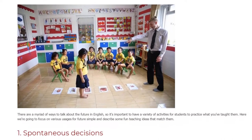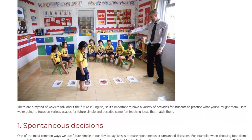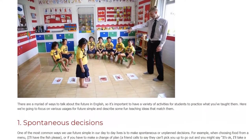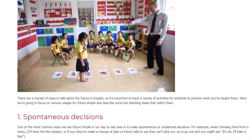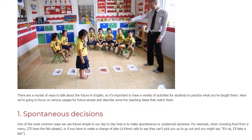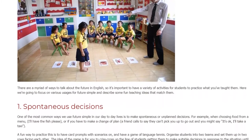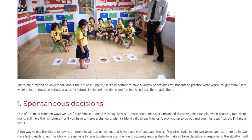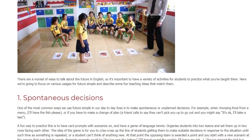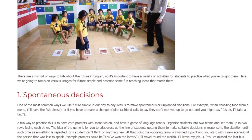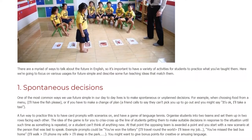1. Spontaneous Decisions. One of the most common ways we use Future Simple in our day-to-day lives is to make spontaneous or unplanned decisions. For example, when choosing food from a menu: 'I'll have the fish please,' or if you have to make a change of plan — a friend calls to say they can't pick you up and you might say 'It's okay, I'll take a taxi.' A fun way to practice this is to have card prompts with scenarios and play a game of language tennis.